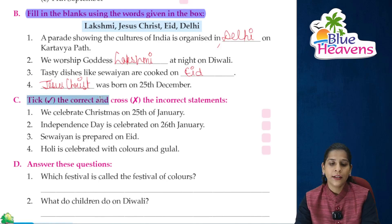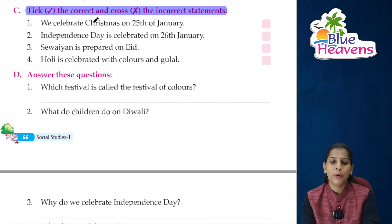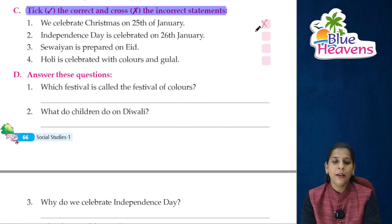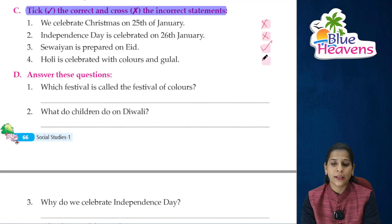Tick the correct and cross the incorrect statements. We celebrate Christmas on 25th January — incorrect, it is 25th December. Independence Day is celebrated on 26th January — incorrect, it is 15th August. Sevainya is prepared on Eid — correct. Holi is celebrated with colors and gulal — correct.